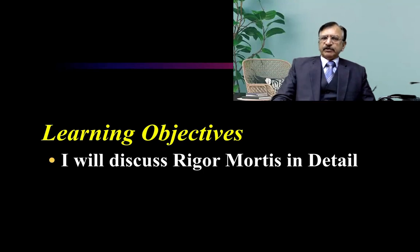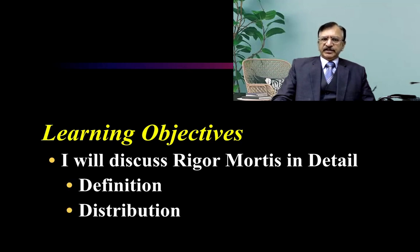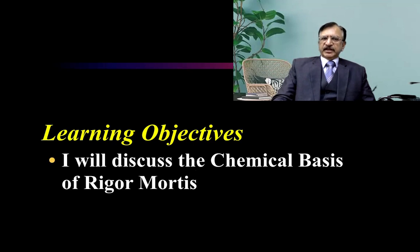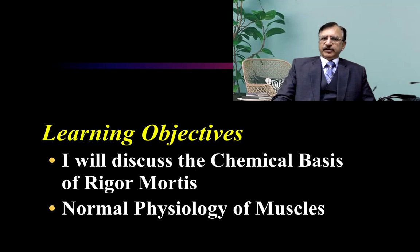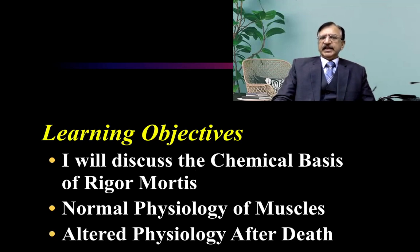I will discuss rigor mortis in detail — its definition, its distribution, progression, and what is the chemical basis of rigor mortis. For that we must understand what is the normal physiology of the muscles and what is the altered physiology after death which leads to rigor mortis.